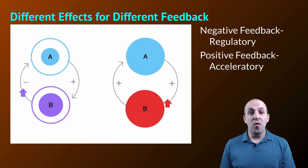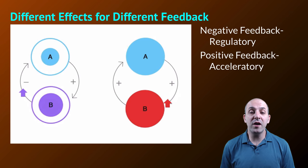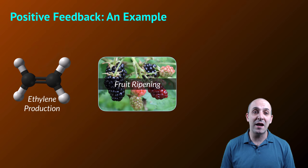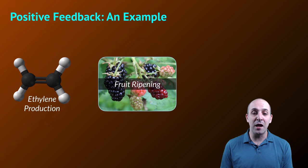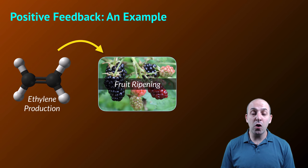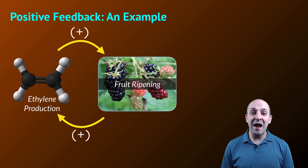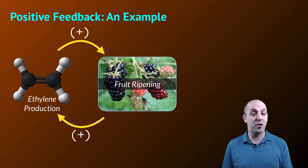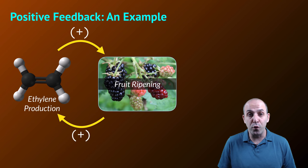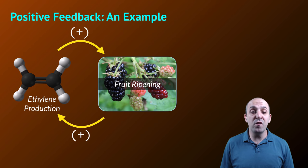Generally, positive feedback is transformative — it's moving the system from one state to another, not keeping it in steady conditions. Living systems absolutely use positive feedback to accomplish particular things, but it is not regulatory in nature. The example I've chosen here is ethylene in fruit ripening. Ethylene is a hormone that fruits produce as they ripen, and it causes the fruit to ripen more. As cells continue to ripen, they produce more ethylene, which leads to more ripening, which leads to more ethylene production — and this continues until the ripened fruit is produced. That is not a regulatory process; it is a transformative process.